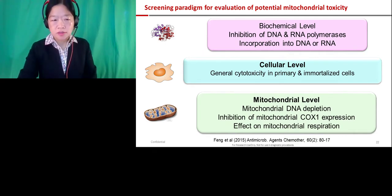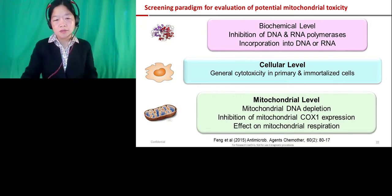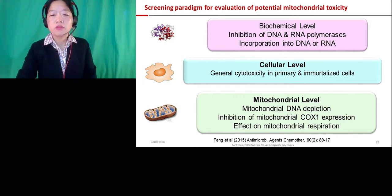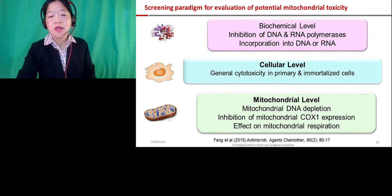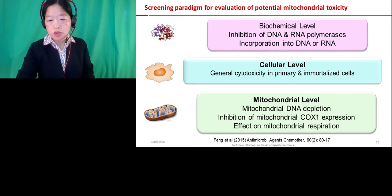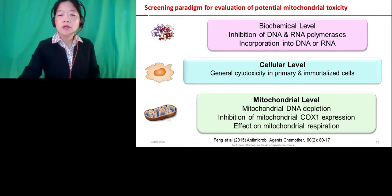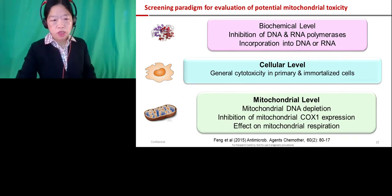Over the years, we learned from these failures and developed a system. This is our current screening paradigm for this class of compounds. We use biochemical assays to look at DNA and RNA polymerases and see whether a nucleoside analogue interacts with them. Second, we look at the cellular level using both primary cells and immortalized cells, which provide different information. Lastly, we go to the mitochondrial level, looking at DNA depletion, specific mitochondrial protein expression, and functional assays including respiration.